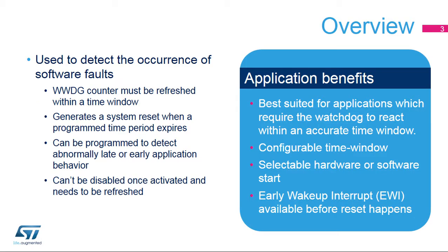The Window Watchdog is used to detect the occurrence of software faults. It has a programmable free-running down-counter that must be refreshed within a window period that guarantees proper software execution. If a problem occurs and the program time period expires, the Window Watchdog generates a system reset. Once enabled, it can only be disabled by a device reset.